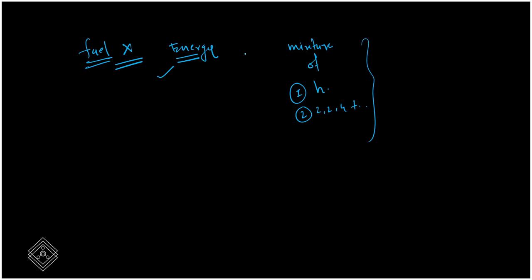This energy is compared with a mixture of heptane and 2,2,4-trimethylpentane. After comparison, let's assume the fuel matches 20% heptane and 80% 2,2,4-trimethylpentane. In this case, the octane number is 80. For example, if fuel Y matches 30% heptane and 70% octane, the octane number is 70. This is the way to calculate octane number.